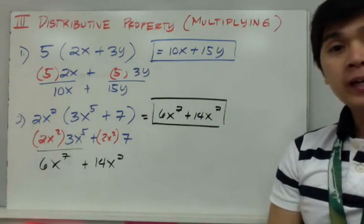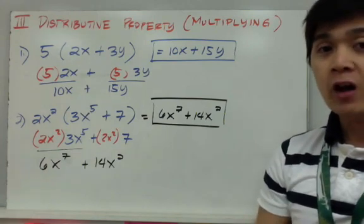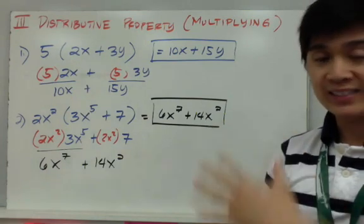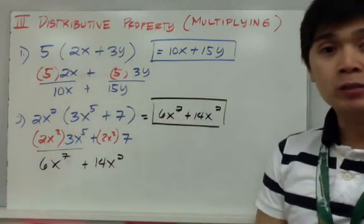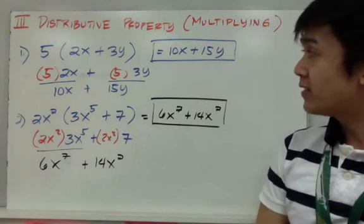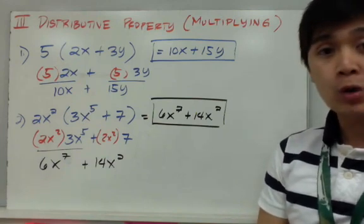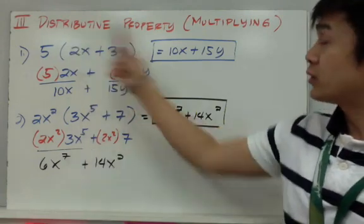Now in multiplication of polynomials, there are different ways to multiply them depending on how the problem is set up. In examples one and two, I am multiplying a monomial by a binomial. In this case, you will use the distributive property.